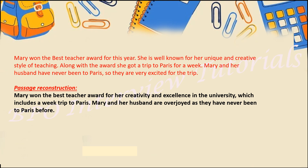The main points: Mary is the character name, awarded with the best teacher award, and also got a trip to Paris for a week. Mary decided to go with her husband and they were very excited. On the basis of those points, the reconstructed passage reads: 'Mary won the best teacher award for creativity and excellence in the university, which included a week trip to Paris.'